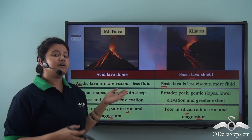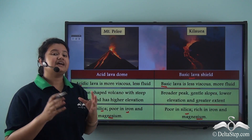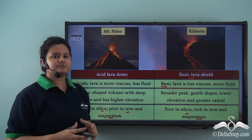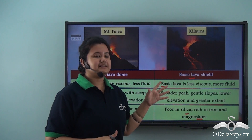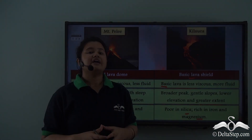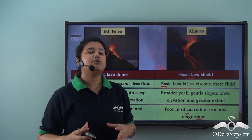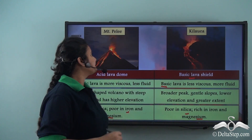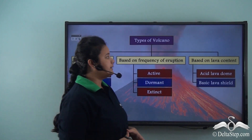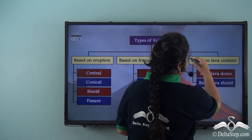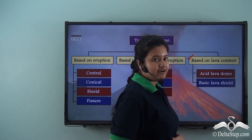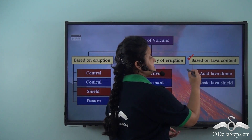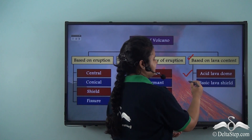To summarize the differences: in an acid lava dome, lava is acidic and sticky, forming a high peak with steep slopes. In a basic lava shield, lava is basic and more fluid, forming a broader peak with gentle slopes. Based on lava content, volcanoes can thus be classified into two types: acid lava dome and basic lava shield.